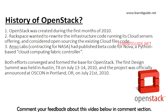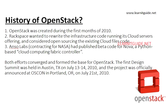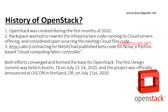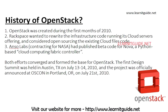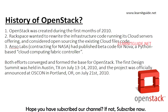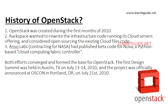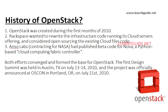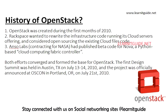Let's see the history of OpenStack. OpenStack was created during the first month of 2010. Rackspace wanted to rewrite the infrastructure code running its cloud servers offering and considered open sourcing the existing cloud files code. Anso Labs, who were contracting for NASA, had published beta code for Nova, a Python-based cloud computing fabric controller. Both efforts converged and formed the base for OpenStack.